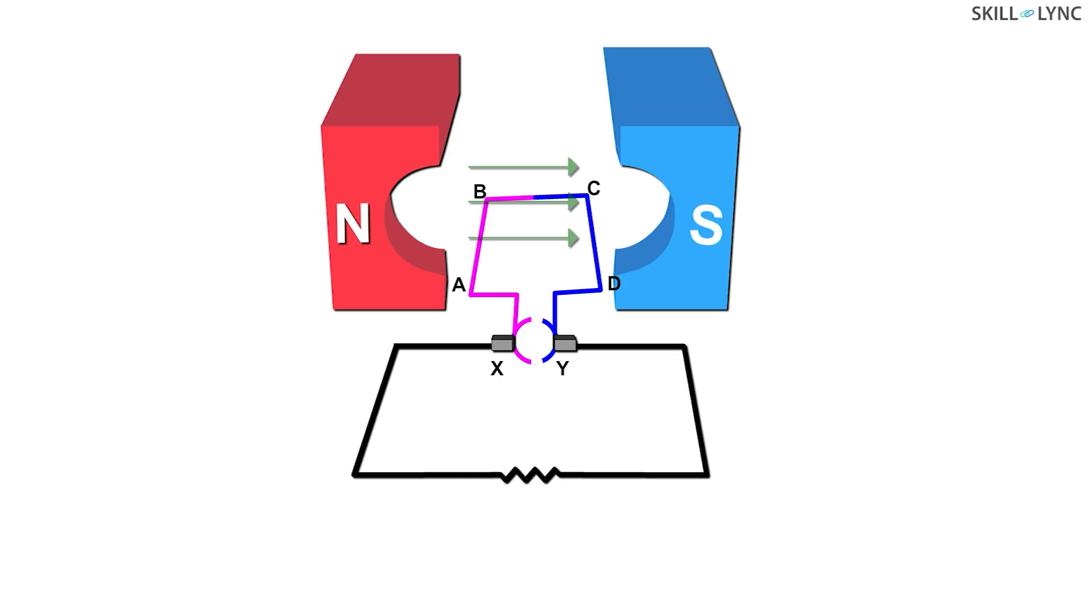To understand the working, here we have the armature coil placed between magnetic fields. The two ends of the armature are connected to the two commutators. These commutators are fixed to the armature and move as the armature moves. Alongside the commutators, two brushes are held fixed.